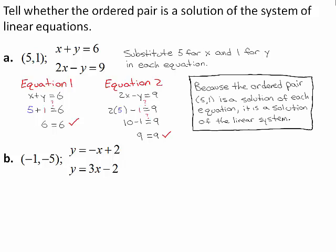Because the ordered pair 5, 1 is a solution of each equation, it is a solution of the linear system.